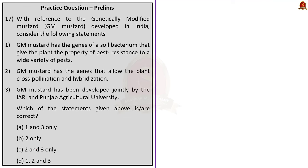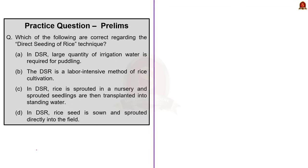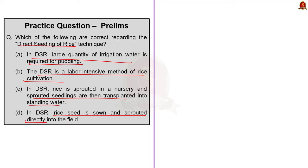Our next topic is direct seeding of rice (DSR). Which of the following is correct regarding the DSR technique? Option A: large quantity of irrigation water is required for puddling. Option B: DSR is a labor-intensive method of rice cultivation. Option C: the rice is sprouted in a nursery and sprouted seedlings are then transplanted into standing water. Option D: in DSR, rice seed is sown and sprouted directly into the field. In DSR, the rice seed is sown and sprouted directly into the field, unlike the conventional puddled transplanting system (PTR) where the rice is sprouted in nursery and transplanted into standing water.